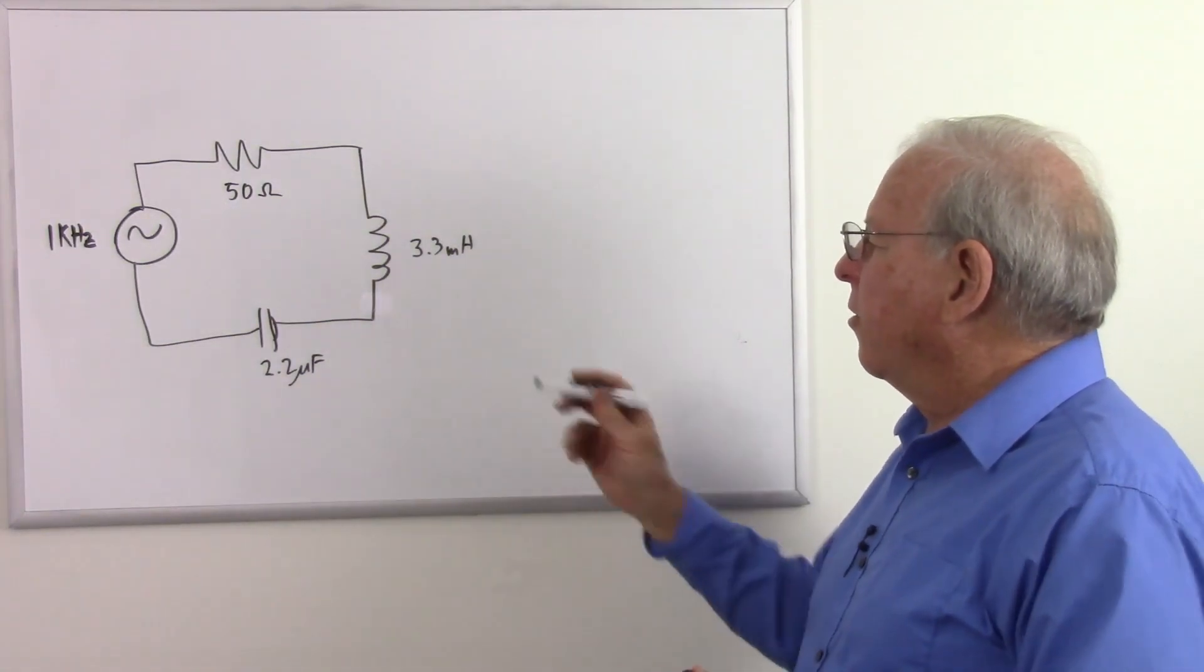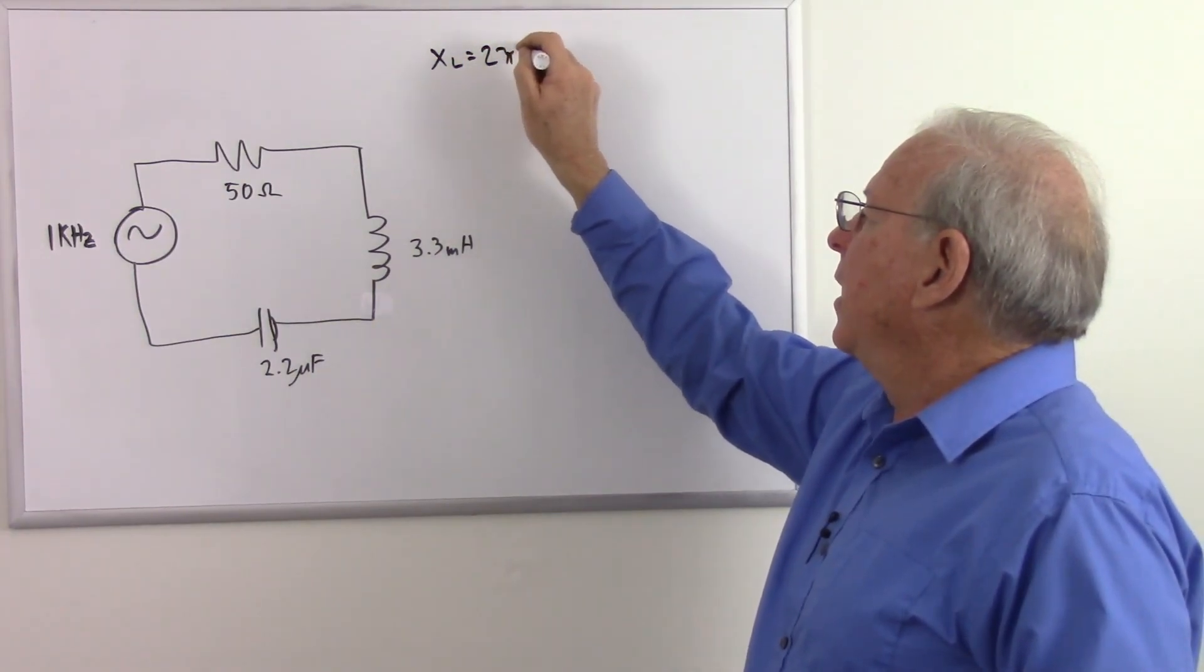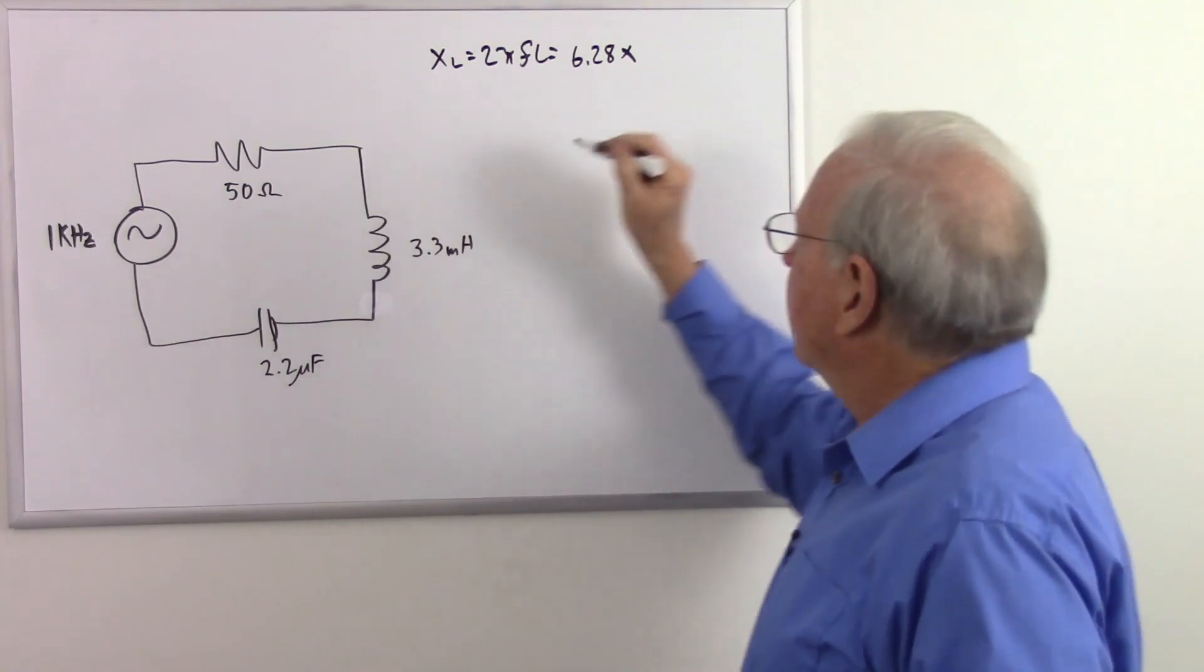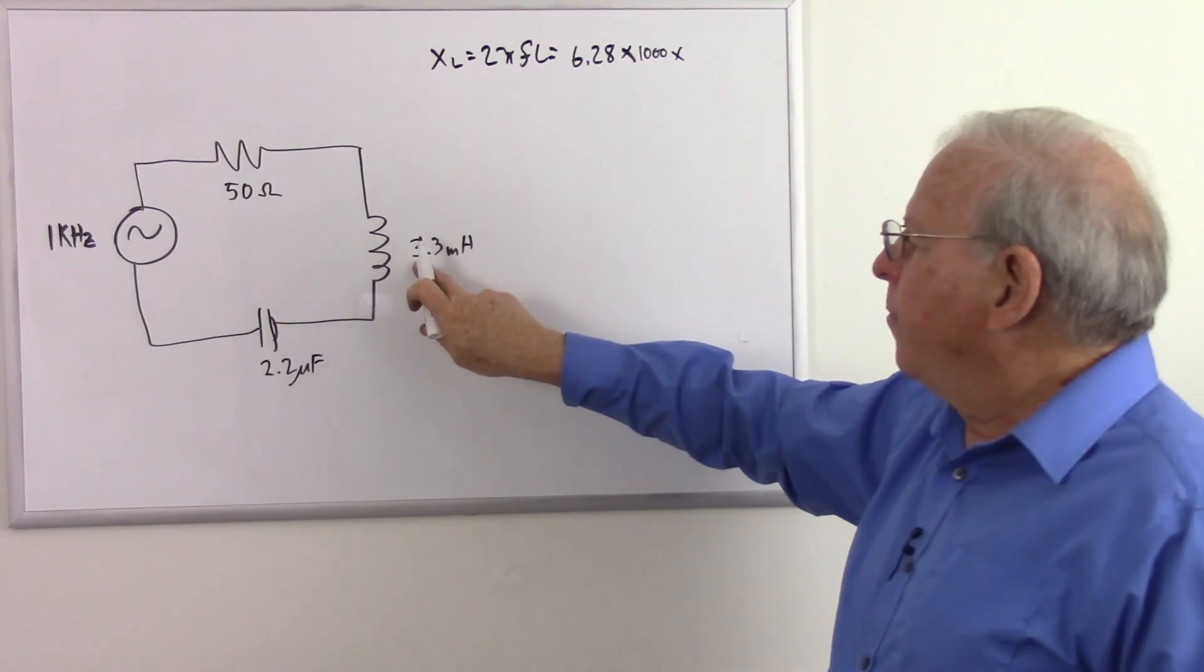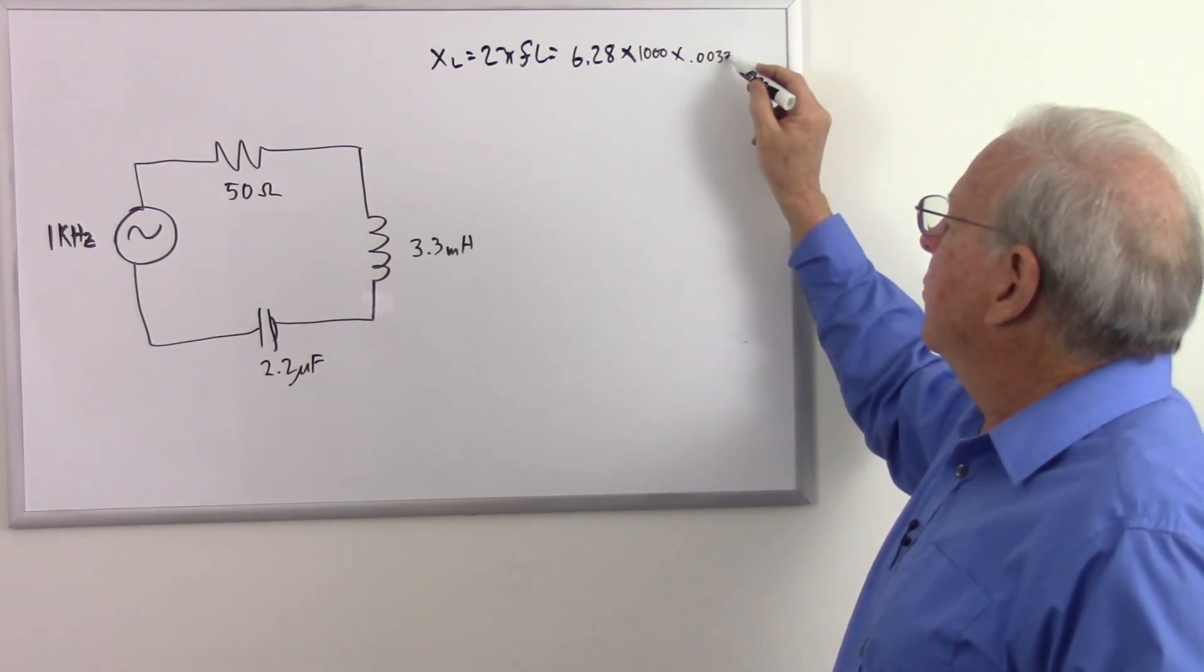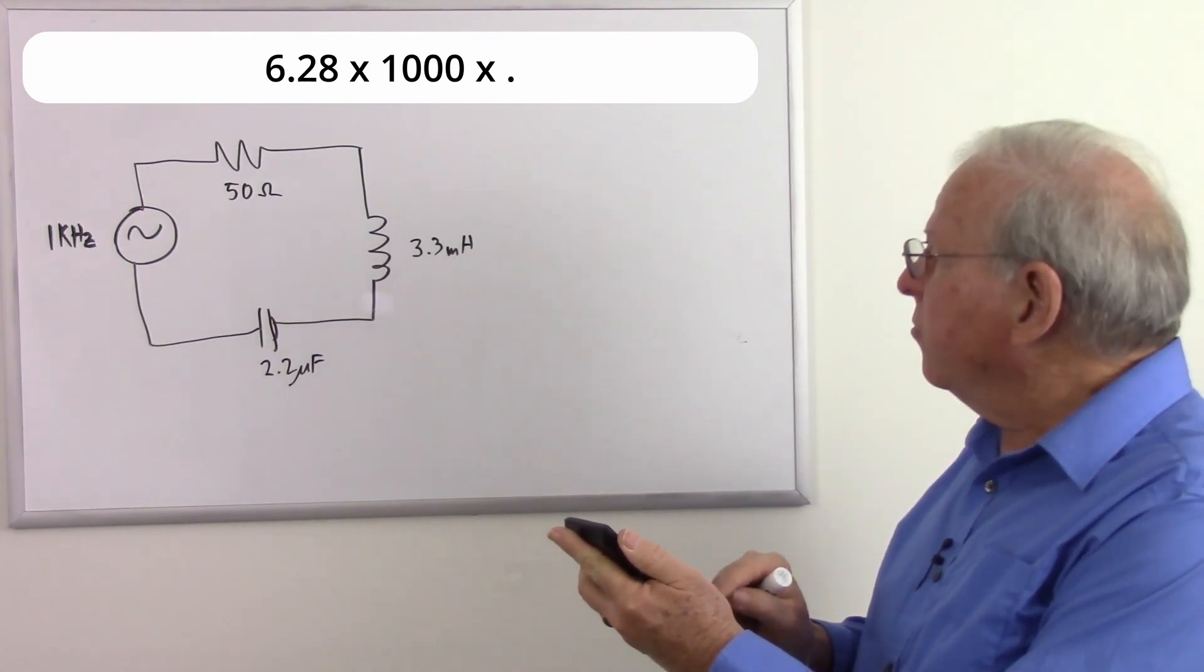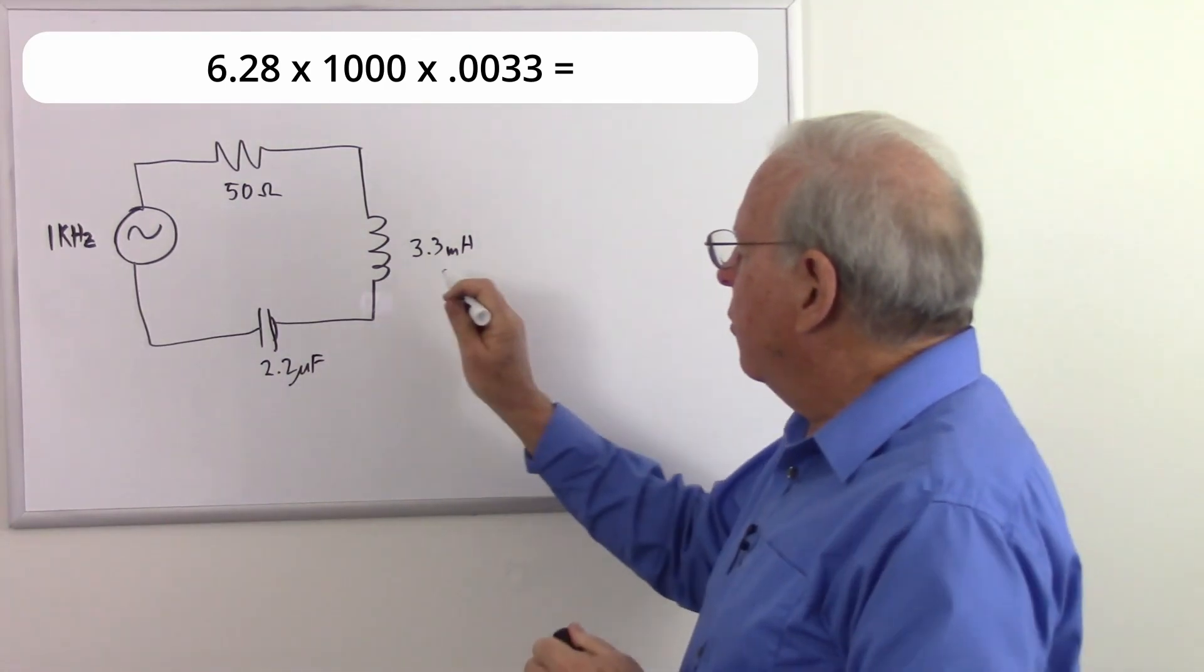First thing we need to do is calculate our inductive reactance. So X sub L equals 2 pi F L, which in this case is going to be 6.28 times our frequency, 1,000 times 3.3 millihenries, so that's 0.0033 Henrys. 6.28 times 1,000 times 0.0033 equals 20.72 ohms for our inductive reactance.